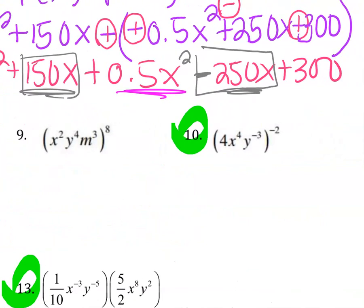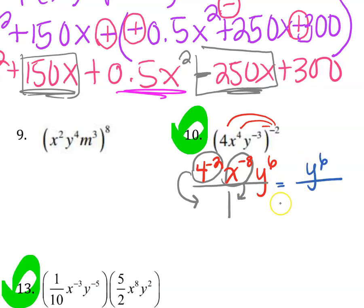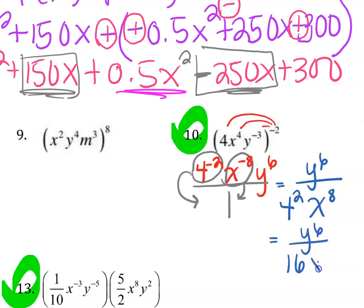Moving on to question 10. You can distribute that outside exponent to everybody: this gives 4 to the negative 2, x to the negative 8, and y to the positive 6. Remember, negative exponents are like elevators — they move things up or down. So move the 4 to the negative 2 and the x to the negative 8 to the other side of the fraction bar; they become positive. y to the 6th stays in the numerator. 4 squared is 16, so your final answer is y to the 6th over 16x to the 8th.